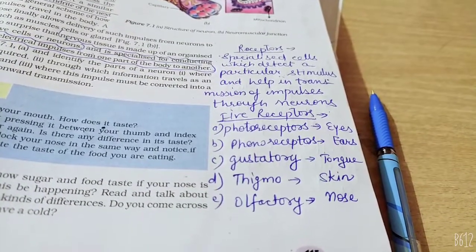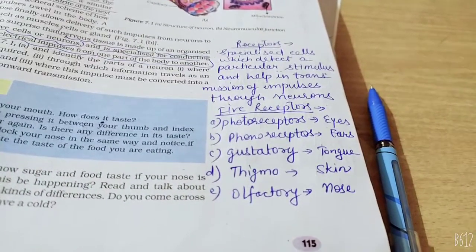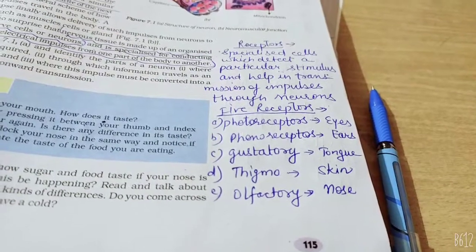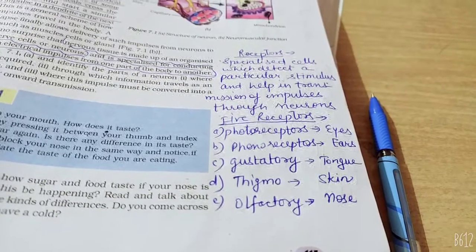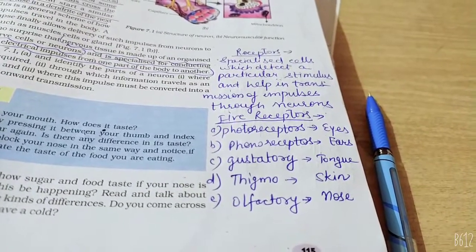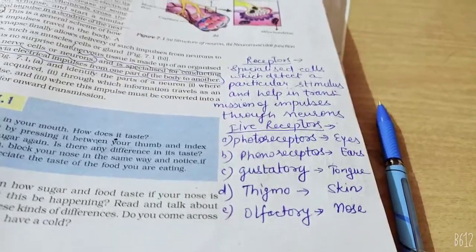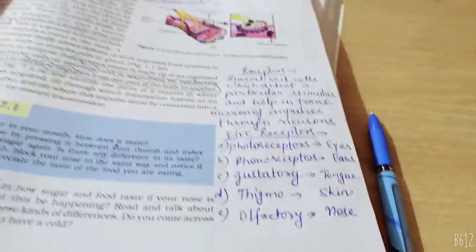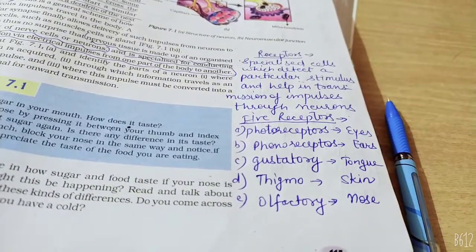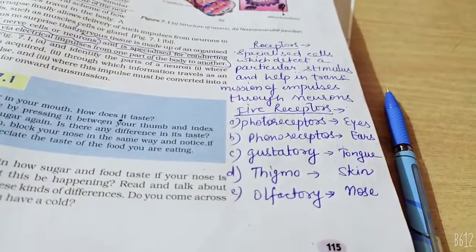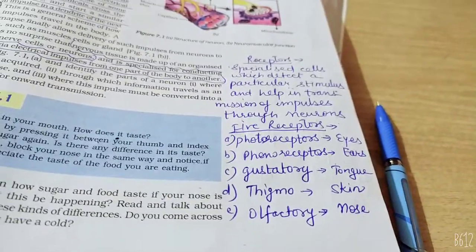The next is gustatory, which is tongue, which tastes things. The next is thigmoreceptor, which is skin. If you feel warmth or feel pinched, this is skin. The message to the brain tells what happened. It acts. Olfactory receptor is nose. If there's smoke in the room, you smell it. Olfactory receptor is nose. So, there are 5 receptors: Photo, Phono, Gustatory, Thigmo, and Olfactory. Please write this in the book.